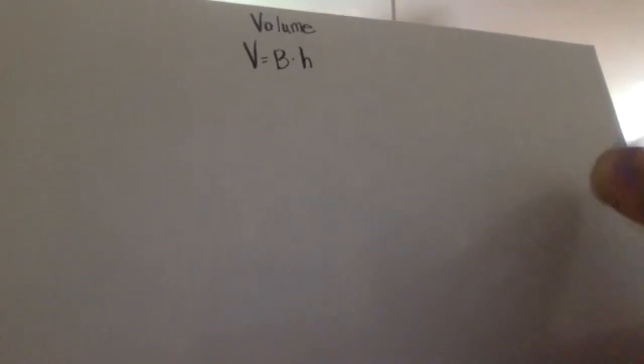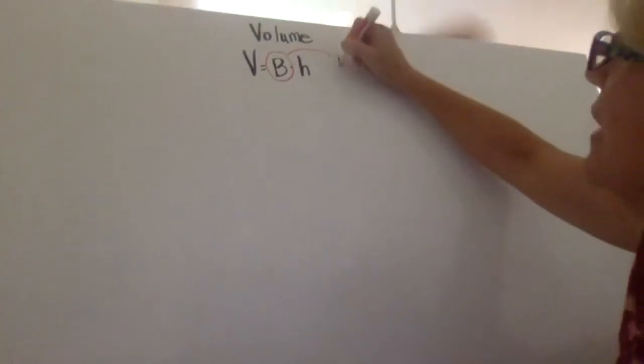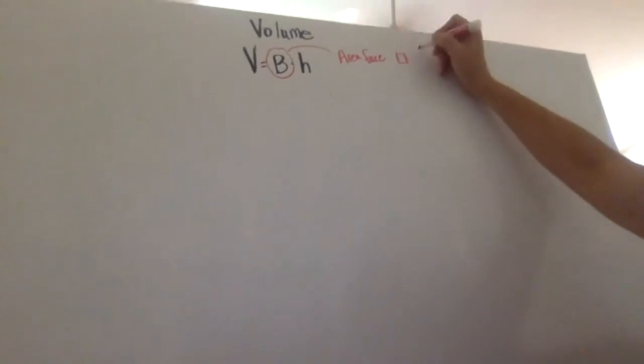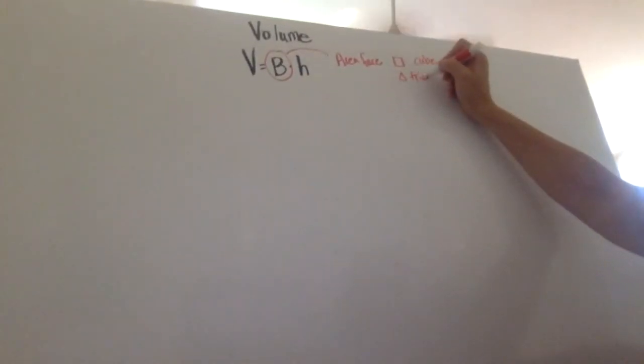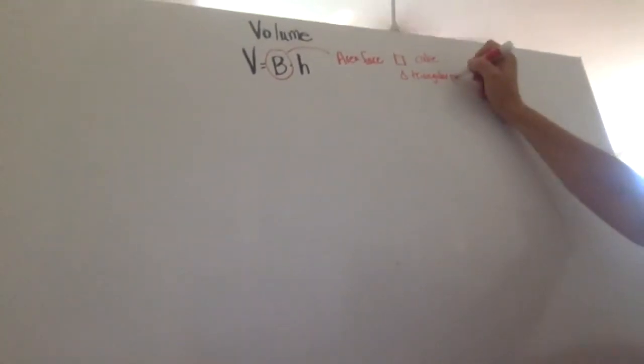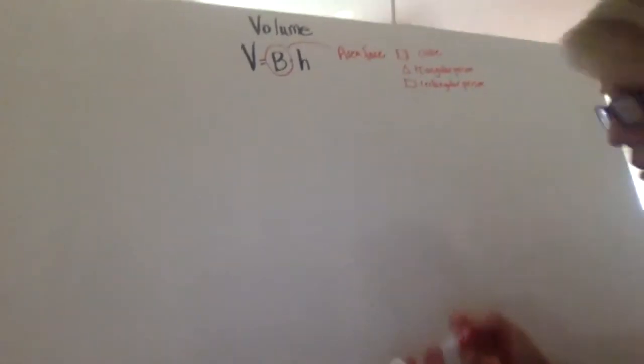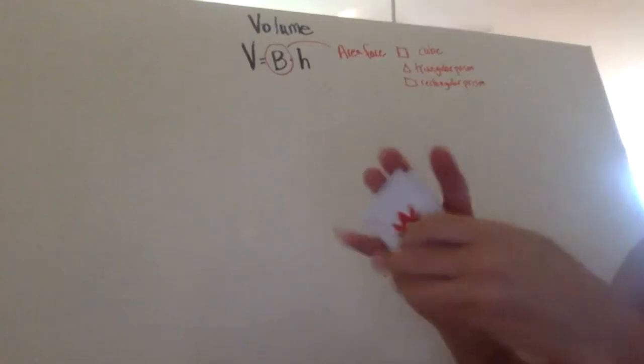We're going to be talking about volume again today. Remember the volume equation is always the base times the height. But remember this base, this big B, doesn't mean just one dimension. It means the area of the face. So if that face is a square for a cube, it's a triangle if we're talking about a triangular prism, and it's a rectangle for a rectangular prism. Remember volume talks about capacity - how much is inside that three-dimensional shape? This area is the area of the face times the height of how many of those faces you're stacking up.